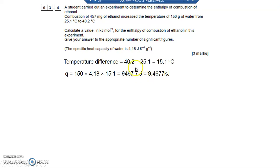This gives 9467.7 joules. It's in joules because the specific heat capacity units are in joules. Converting to kilojoules: going from small unit to bigger unit, divide by a thousand - 9.4677 kilojoules. That's the heat given out. Now I've got to work it out per mole.